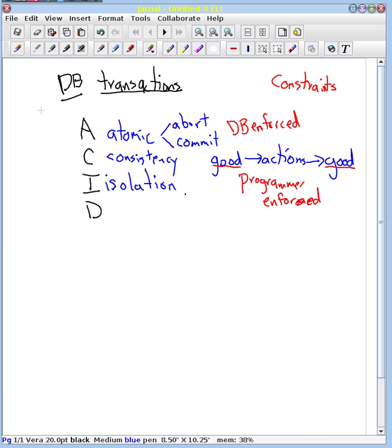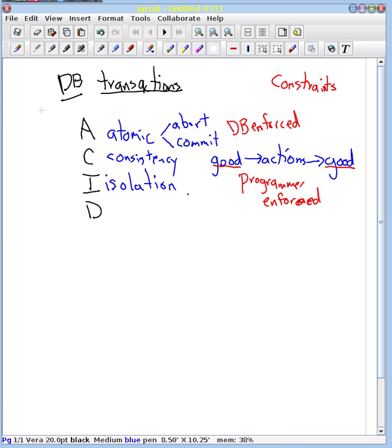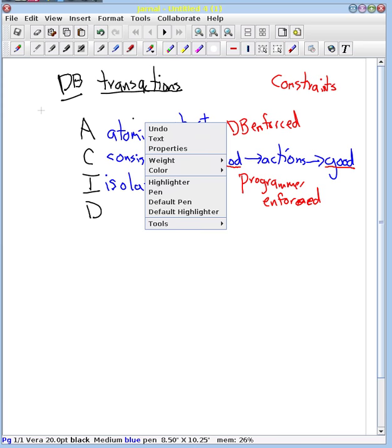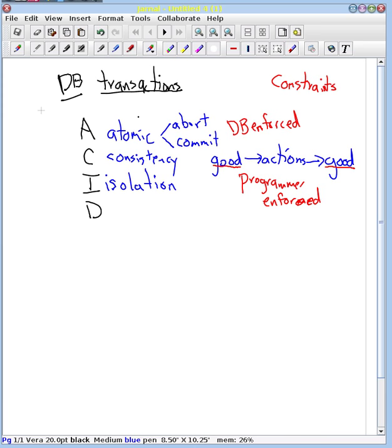But isolation is technically defined in terms of if we did each of these transactions in sequence, first one transaction, then another transaction, then a third transaction, that we would get the same results as if we ran them all together. And so that would prevent us from withdrawing money and then withdrawing money again. So what we're saying is we don't get the wrong results because we were running two transactions together at the same time. We still get the right results.